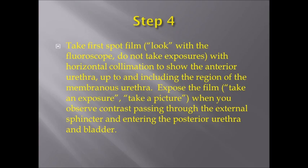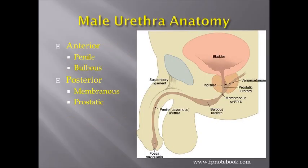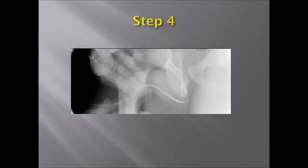Step 4: Take the first spot film with horizontal collimation to show the anterior urethra up to and including the region of the membranous urethra, represented by a single arrow. Expose the film when you observe contrast passing through the external sphincter and entering the posterior urethra and bladder.